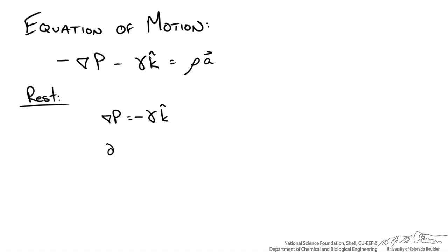So we get an ordinary differential equation that relates the pressure in the z direction to our specific weight of the fluid. Recall that our specific weight is just the density of the fluid times our gravitational constant.